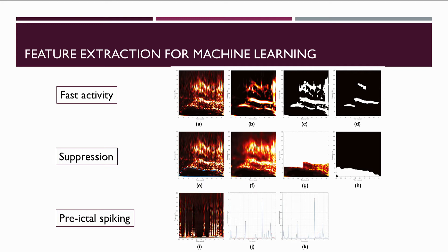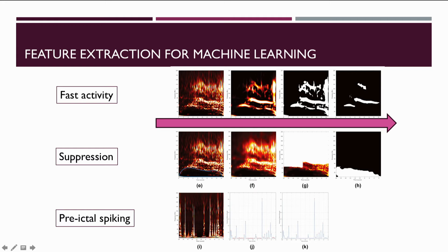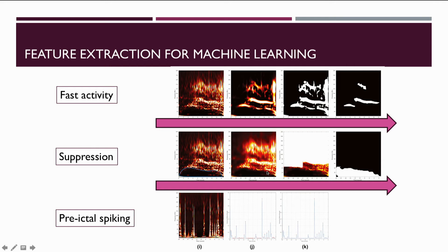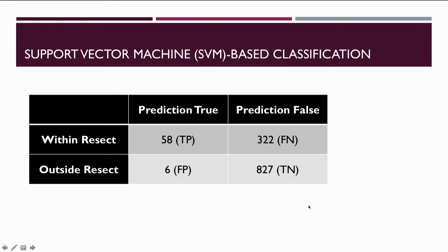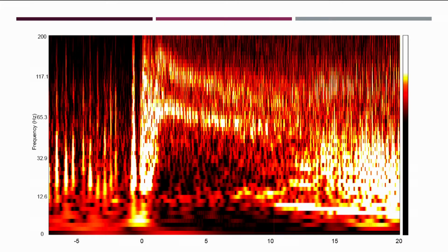To verify quantitatively the validity of this characteristic pattern observed by visual inspection, a feature extraction of the three components was performed. The narrow band of fast activity was extracted by a multiscale iterative Frangi filter in the region of the time-frequency plot. The suppression was extracted by a fast-activity-constrained thresholding after edge-preserving guided filtering, and the preictal spiking was found by a large local maximum detection algorithm. We used a support vector machine to distinguish epileptogenic zone contacts from others, and the classifier successfully achieved 0.7% false positive rate and 90.6% positive predictive value.